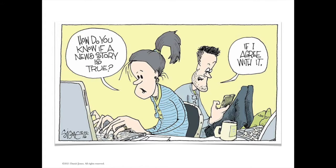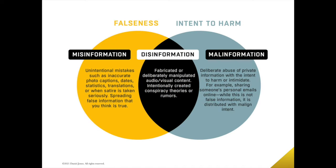How do you know if a news story is true? "If I agree with it." With misinformation, this is unintentional mistakes such as inaccurate photo captions, dates, stats, translations, or when satire is taken seriously — spreading false information that you think is true. With disinformation, this is fabricated and is deliberately manipulated, with intent to create conspiracy theories or rumors. And malinformation is deliberate abuse of private information with the intent to harm or intimidate.